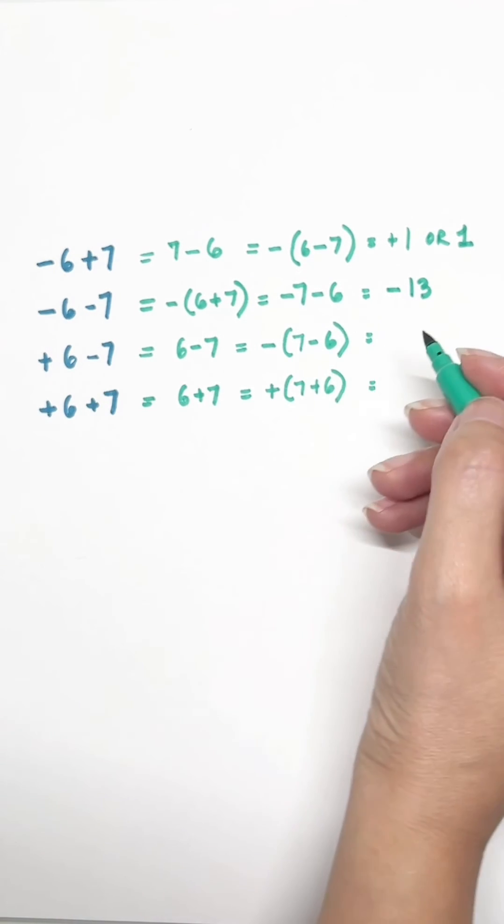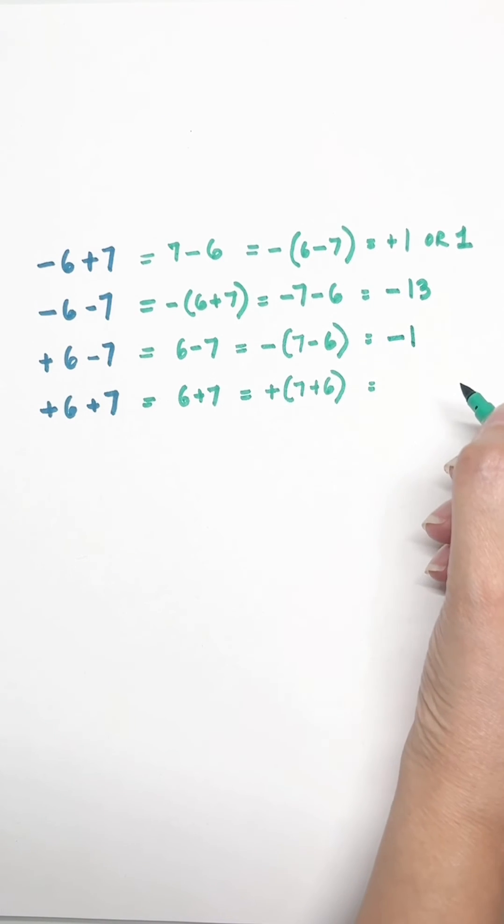-7 - 6: larger digit is 7, so minus. But you're going to add it, so it's -13.